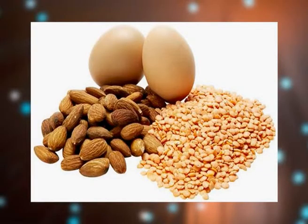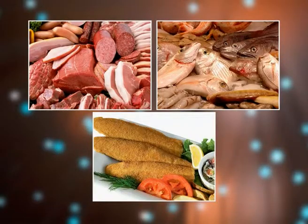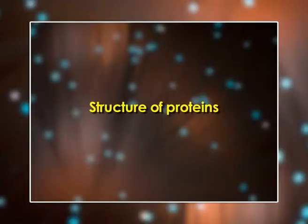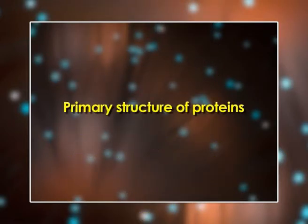Proteins also form the major structural components of many natural foods, often determining their overall texture — for example, the tenderness of meat or fish products. They are a major source of energy and contain essential amino acids. Now, the structure of proteins: the first one is primary structure.